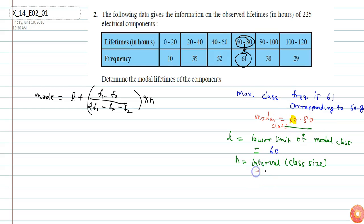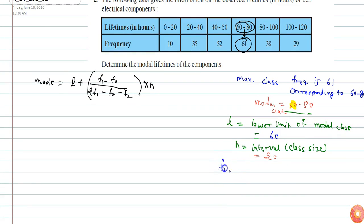The value of h will be 20. Now f1 is the modal class frequency, so f1 will be 61. And f0 is the frequency of the class before the modal class. Before the modal class, the class is 40 to 60, so its corresponding frequency is 52, meaning f0 is 52.